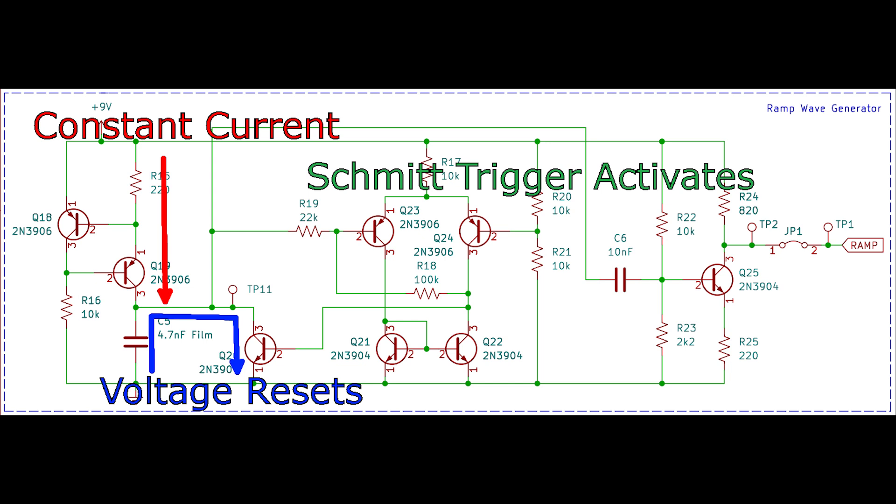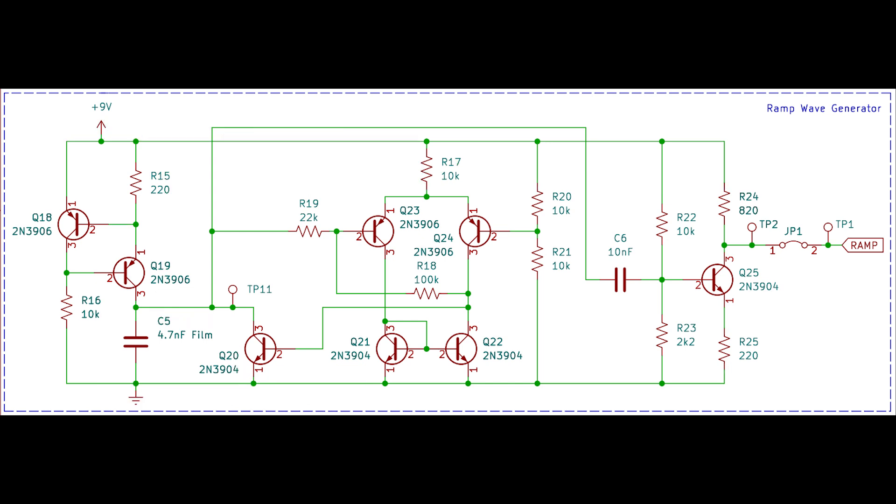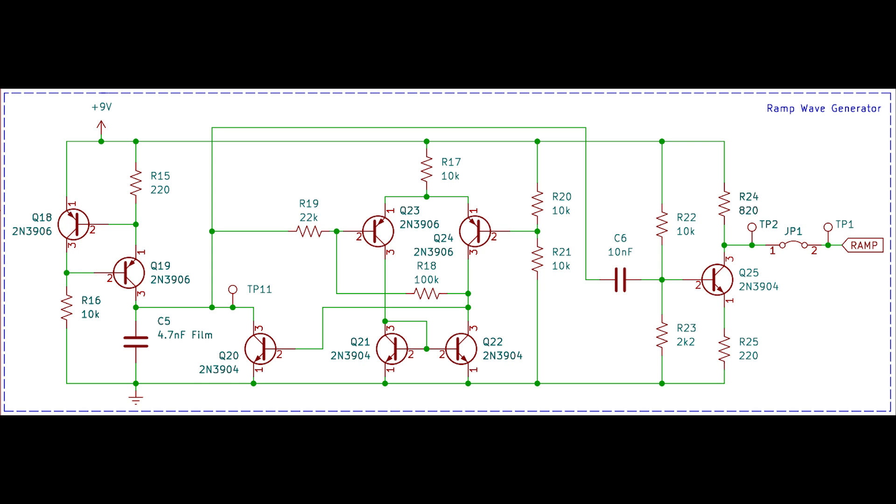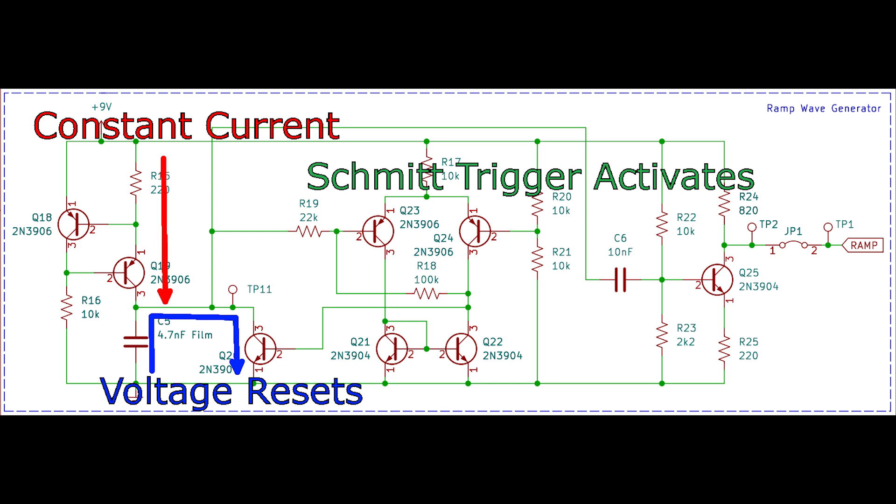This circuit had three different ways in which the frequency could be adjusted. First, we would adjust the size of the capacitor itself. A larger capacitor would slow the rate at which the voltage increases. Second, we could adjust the value of the current flowing. A larger current would increase the rate in which we charge the capacitor. And finally, we could adjust the voltage at which the Schmitt trigger resets the capacitor. A smaller voltage would mean a higher frequency, since the Schmitt trigger would reset the voltage more often.